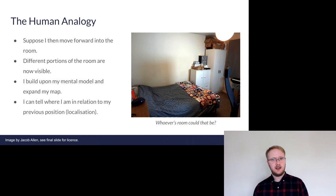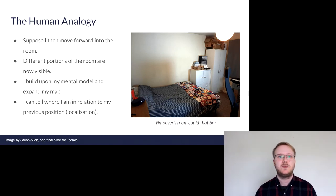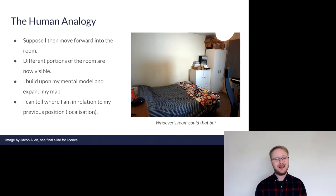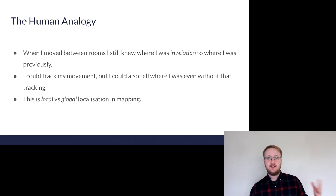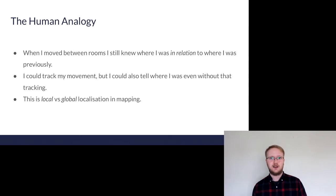If I move to one side or forwards a bit, I now have a different map of the environment — the distances to points I was looking at previously have changed. But crucially, I can still relate that back to the map I had previously. I know where I am now and where I was then. This brings us to one of the core concepts of mapping: I created a map of the environment, but I also localised myself within it. I could tell where I was and where I had been, which is important if we want to find our way back somewhere.